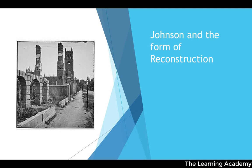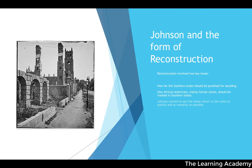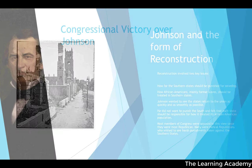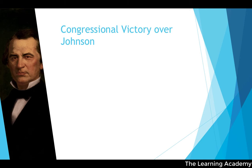Reconstruction involved two key issues: how far southern states should be punished for seceding from the Union, and how African Americans — mainly former slaves — should be treated in the southern states. Johnson wanted states to return to the Union quickly and smoothly, without punishing the South, leaving each state responsible for its African American population. Most members of Congress, being mostly Republican and many being Radical Republicans, opposed this and wished to see harsh punishments against southern states, creating a conflict between Johnson and Congress.